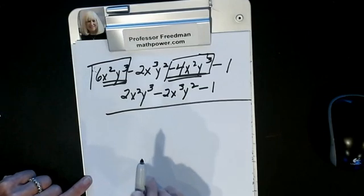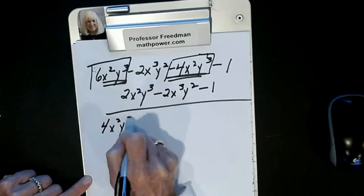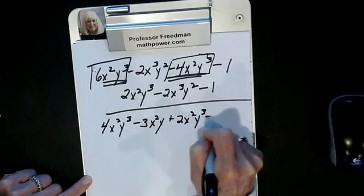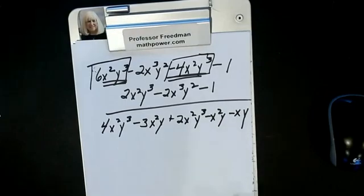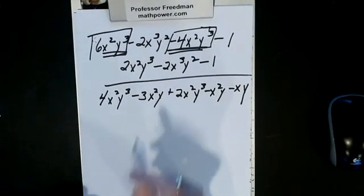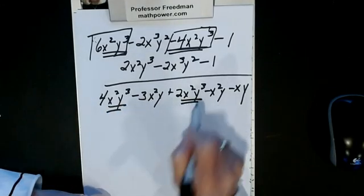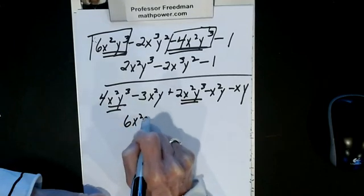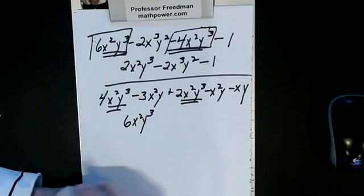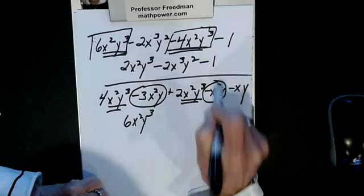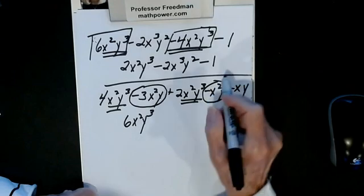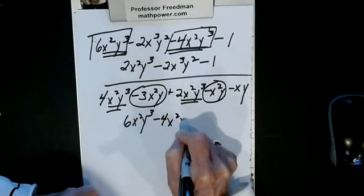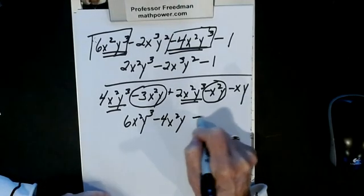Let's do one more: 4x squared y cubed minus 3x squared y plus 2x squared y cubed minus x squared y minus xy. This is an x squared y cubed and this is an x squared y cubed — I can combine them. Signs are alike: 4 plus 2 gives 6x squared y cubed. This is x squared y and this is x squared y — I can combine them. No coefficient means 1 is understood. Signs are alike: negative 3 minus 1 gives negative 4x squared y. The minus xy is all by itself, so it stays as minus xy.